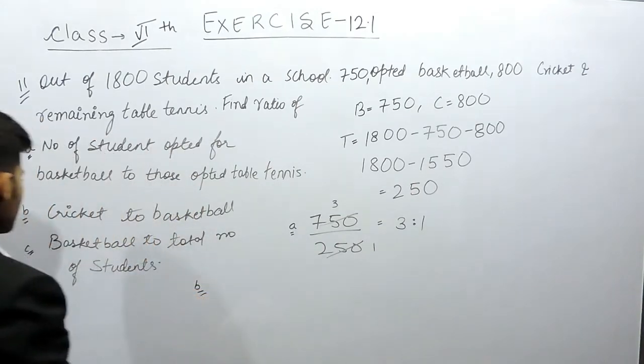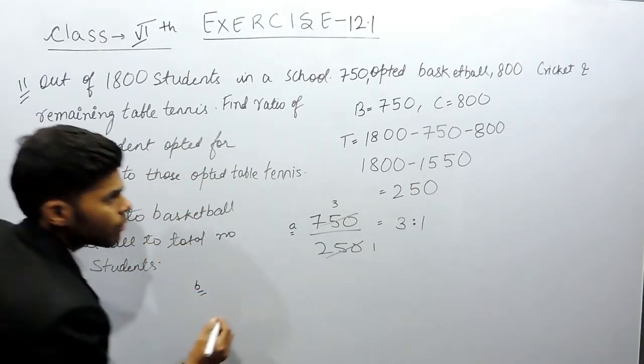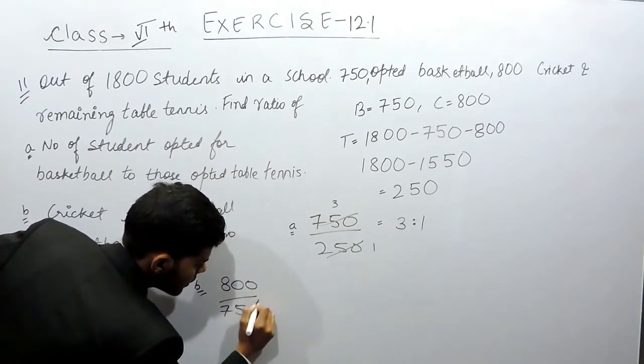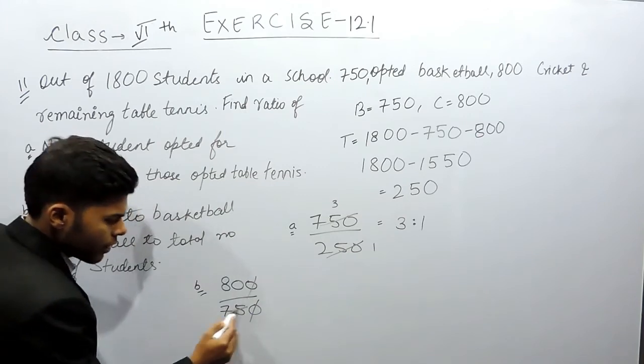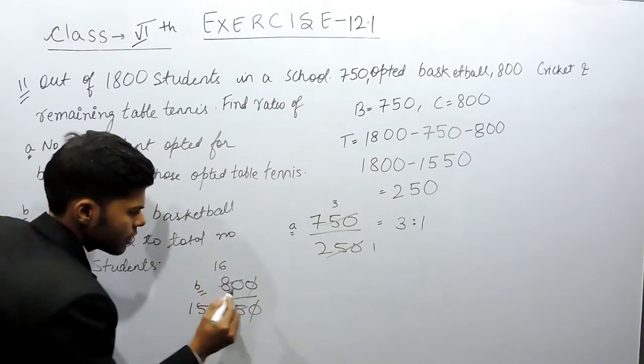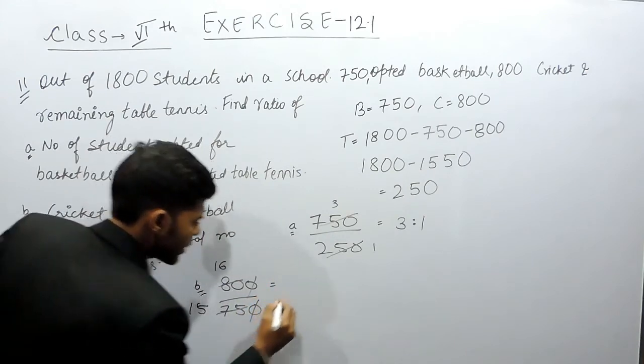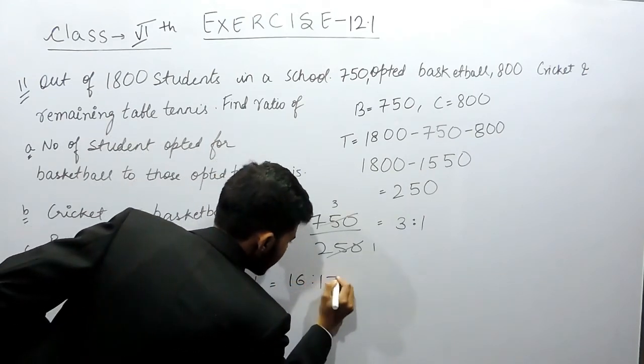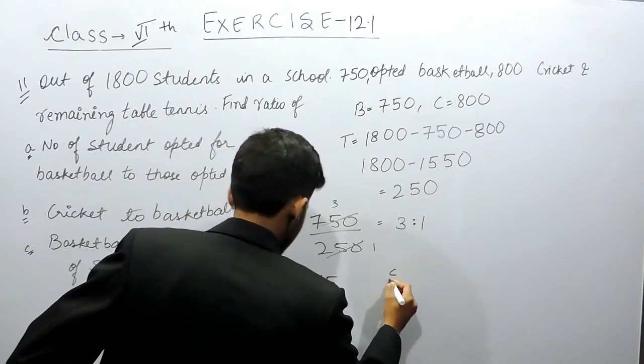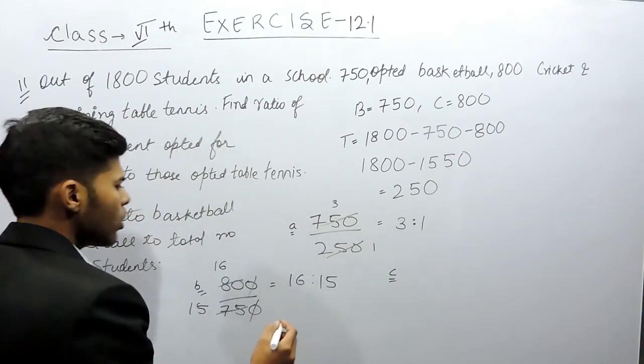Part B: cricket to basketball. Cricket is 800, basketball is 750. This gets cancelled out, 16 times. So this will be equals to 16 ratio 15.